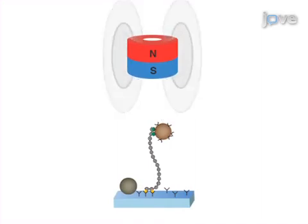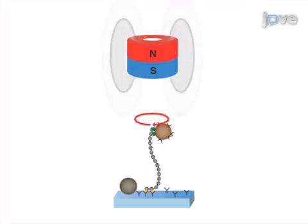In this configuration, the bead's angular position is only constrained by the tethered DNA, not by the magnet, allowing bead rotation, as shown by the red arrow, to report on changes in the twist of the DNA.